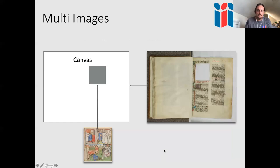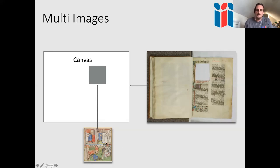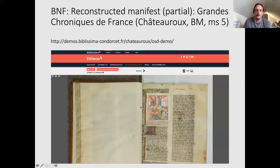Another example from the BNF (National Library of France) shows a manuscript where the main manuscript image is painted onto the canvas, but an illustration — which was cut out long ago and is now at a different Paris institution with a different IIIF Image API endpoint — is painted onto a specific region of the canvas. Both images are combined in a single canvas, with the illustration overlaid onto the original. You can even zoom higher into the illustration because it was digitized at greater detail.